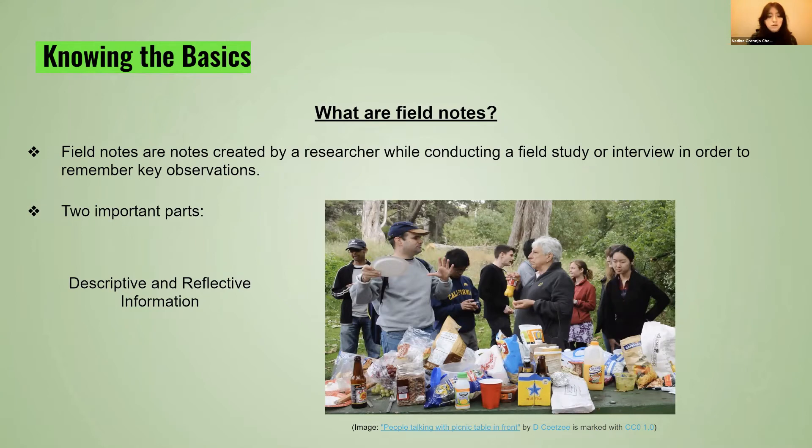Descriptive notes are basically your observations. You're going to write exactly what you're seeing, what you're hearing, what type of behaviors you're seeing people have, or the type of actions they're doing when they're at your location.